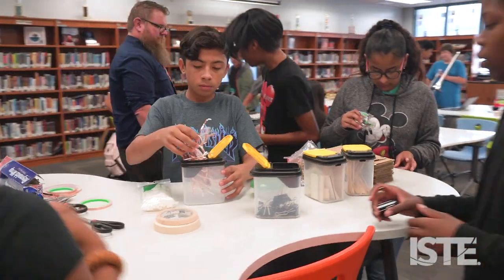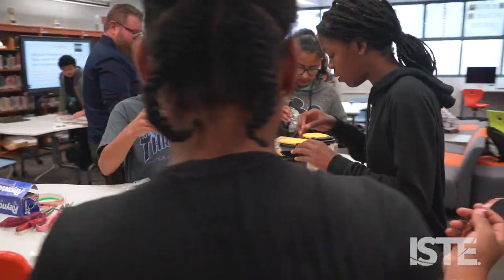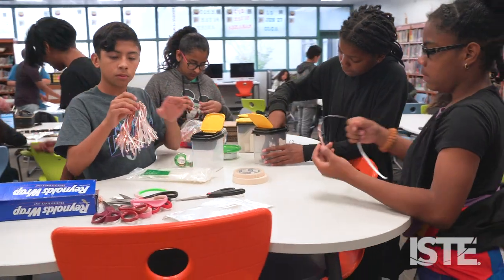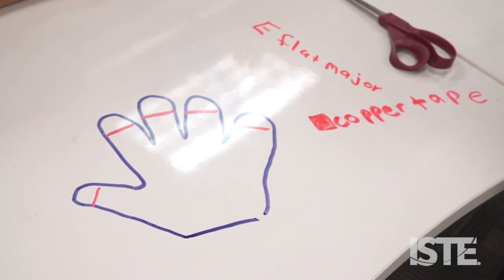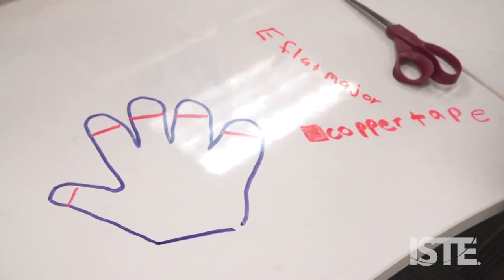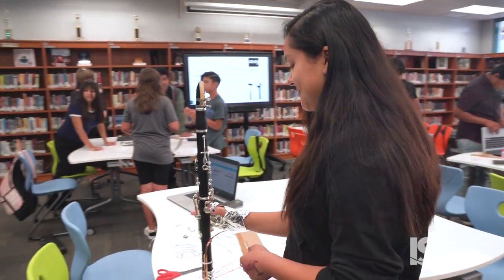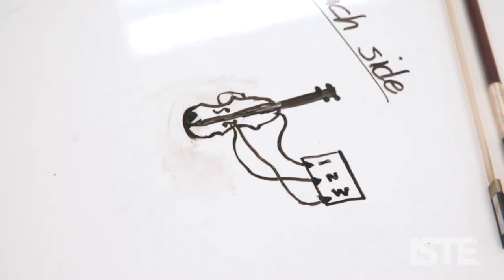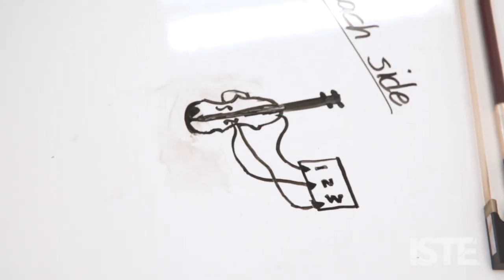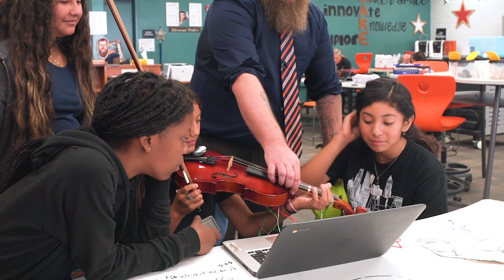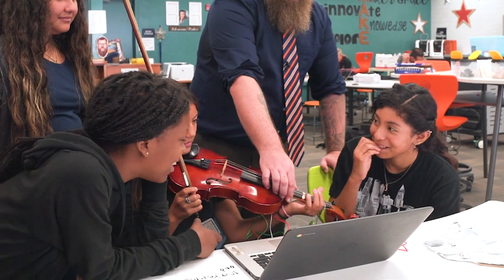I learned so much from the students as well. I'll have my lesson planned out, expecting to go one way, and then a student will say, 'Well, what if we tried it this way?' And I'm like, 'What if we tried it that way? That's a great idea.' You changed the sound — you distorted the violin. Now you can play rock violin.